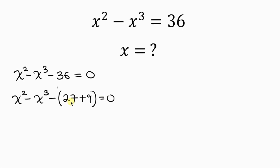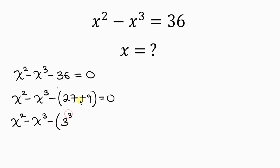Why did I use 27 and 9? It is because what we have here involves a perfect cube and a perfect square. The same thing applies: 27 is a perfect cube, and 9 is a perfect square. So this simplifies into x squared minus x cubed minus 3 cubed plus 9, where 9 as a perfect square can be written as 3 squared, equal to 0.